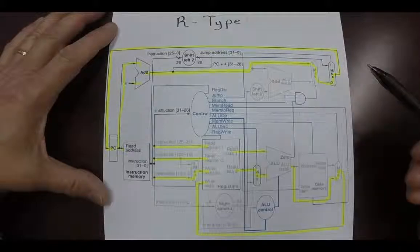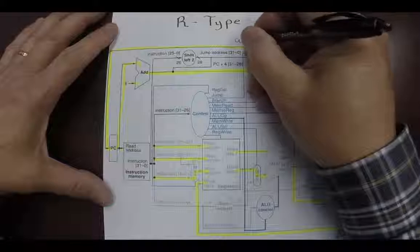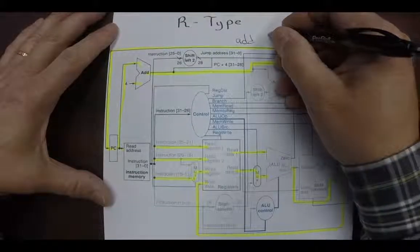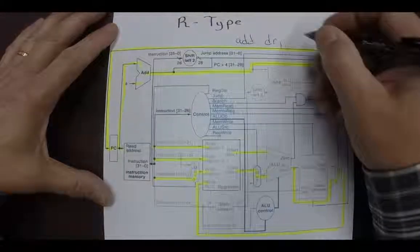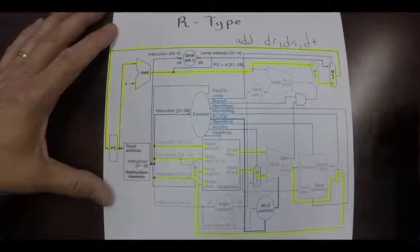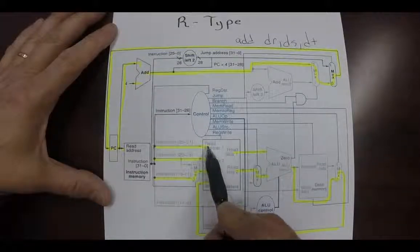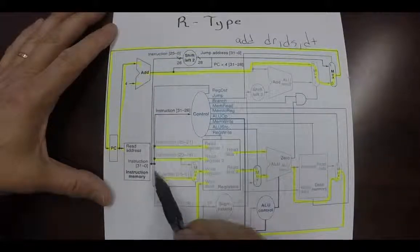So what happens whenever we get an R type instruction, which is similar to an ADD—I'll put the ADD up here—we have a destination register and the two operand registers. So what we have here is we have one of the operand registers coming in through here and that's sent to the register memory.